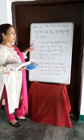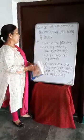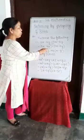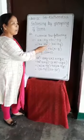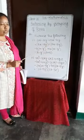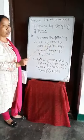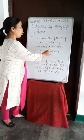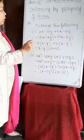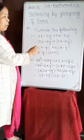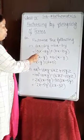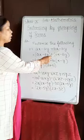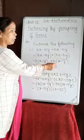Now see the first example: AX minus AY plus BX minus BY. Whenever you factorize the terms, first check whether any number or term is common in all. If not, then group them. AX minus AY will come in one group, plus BX minus BY in another group.